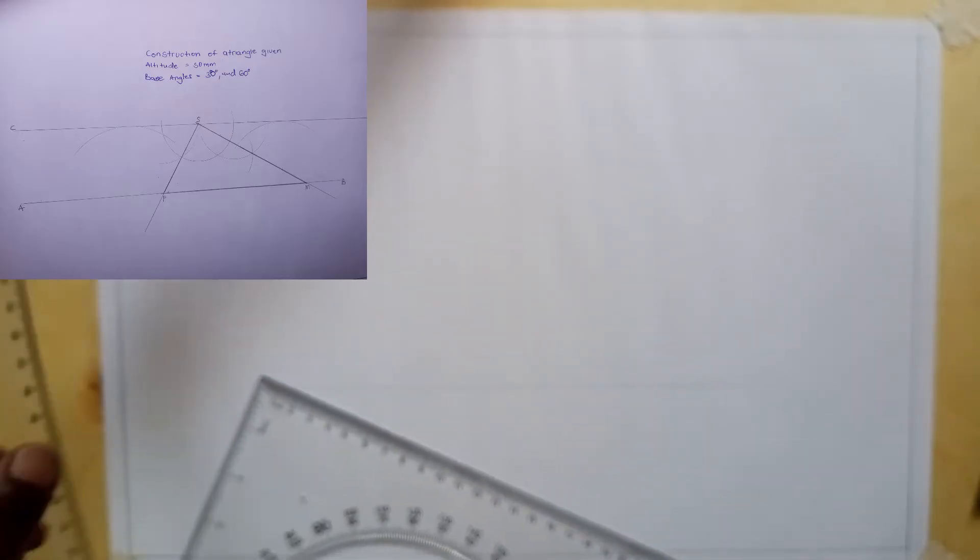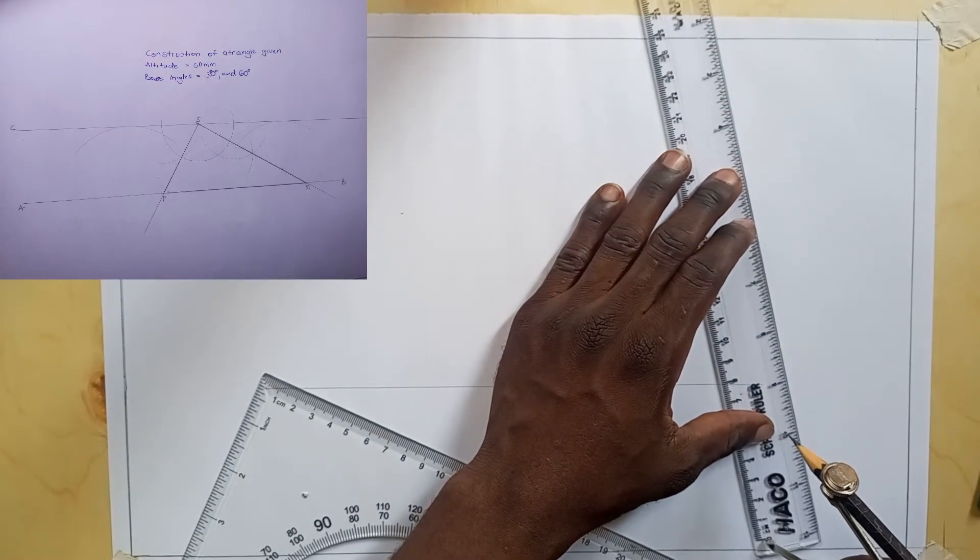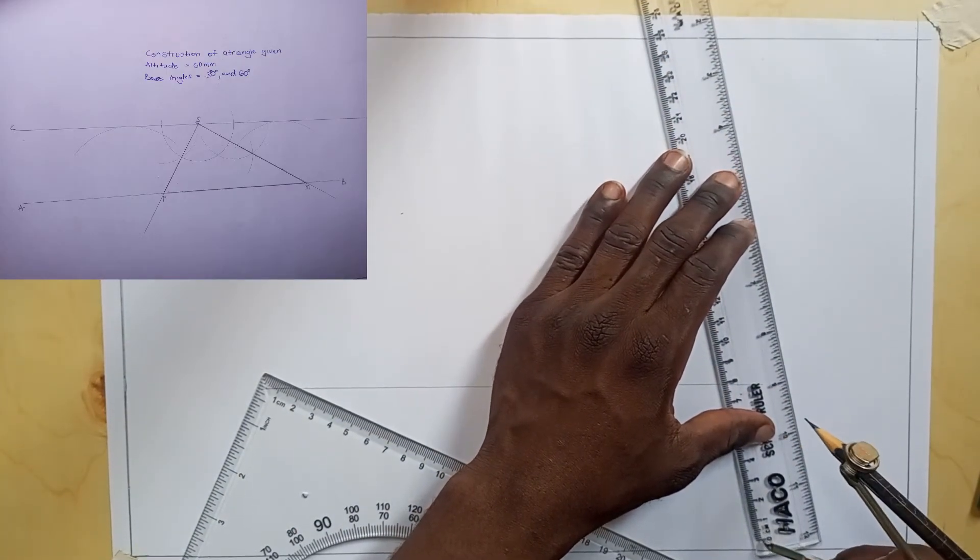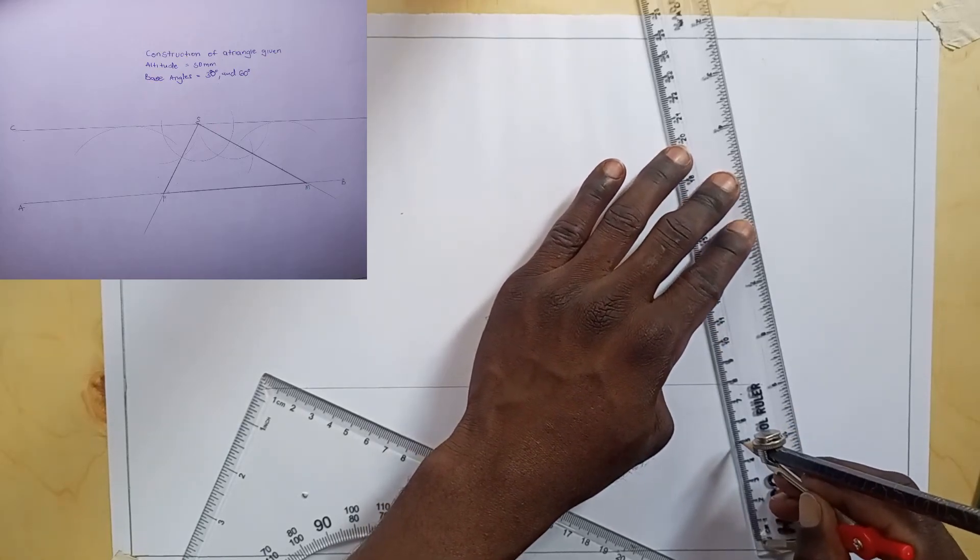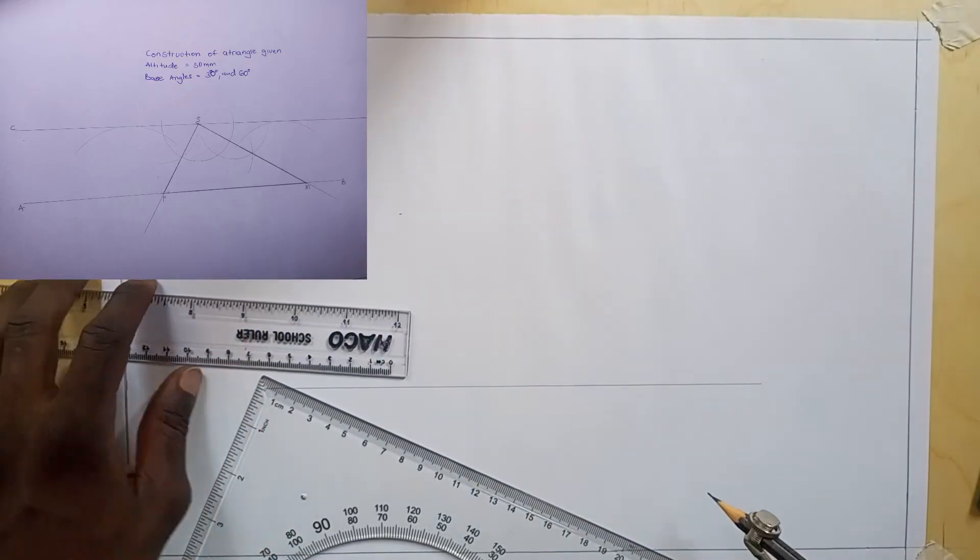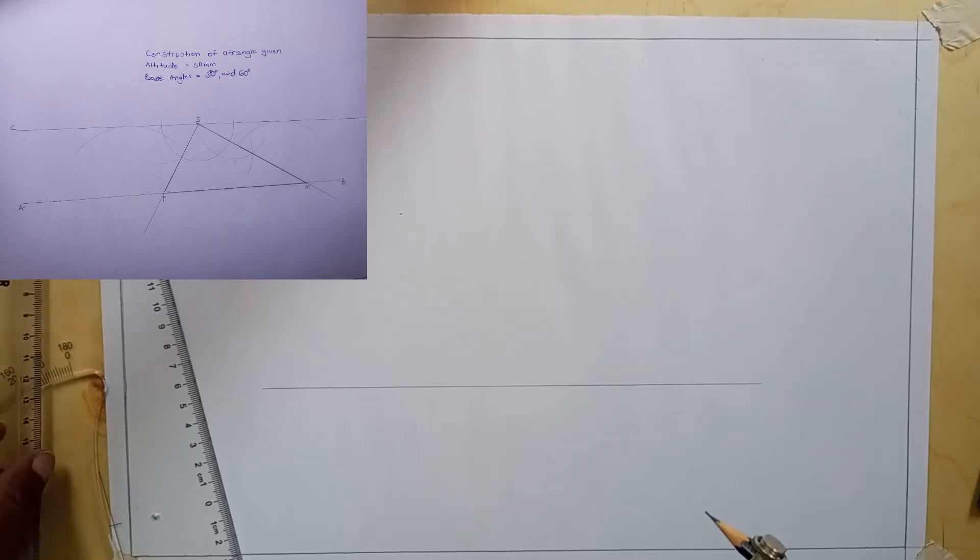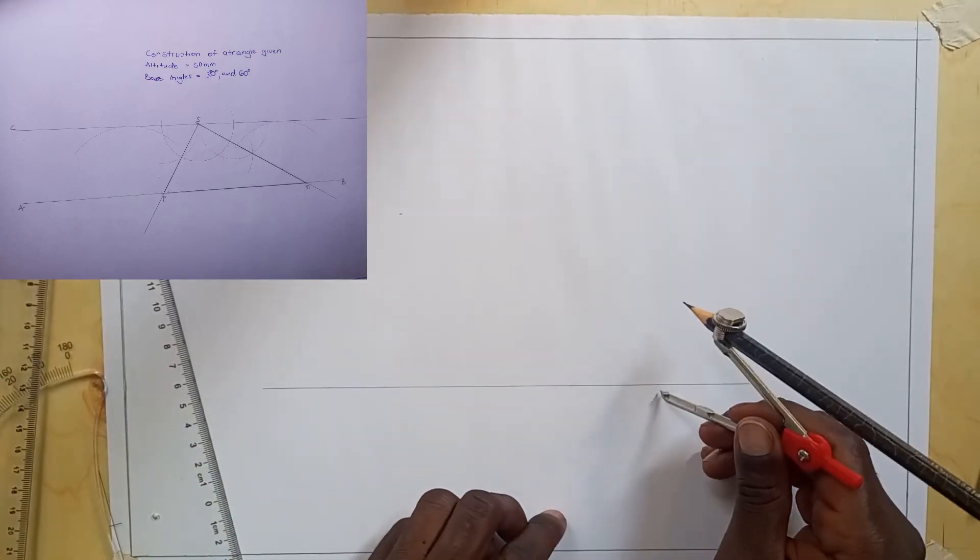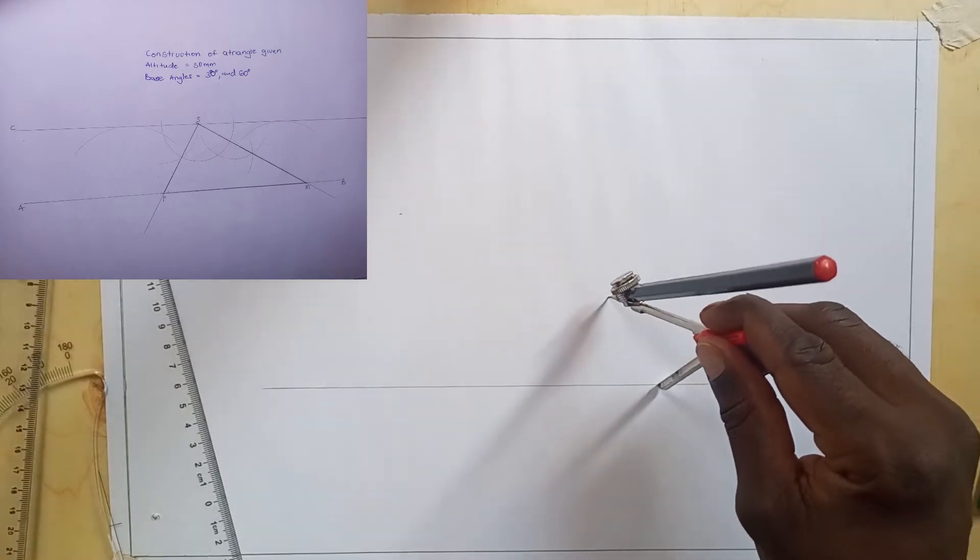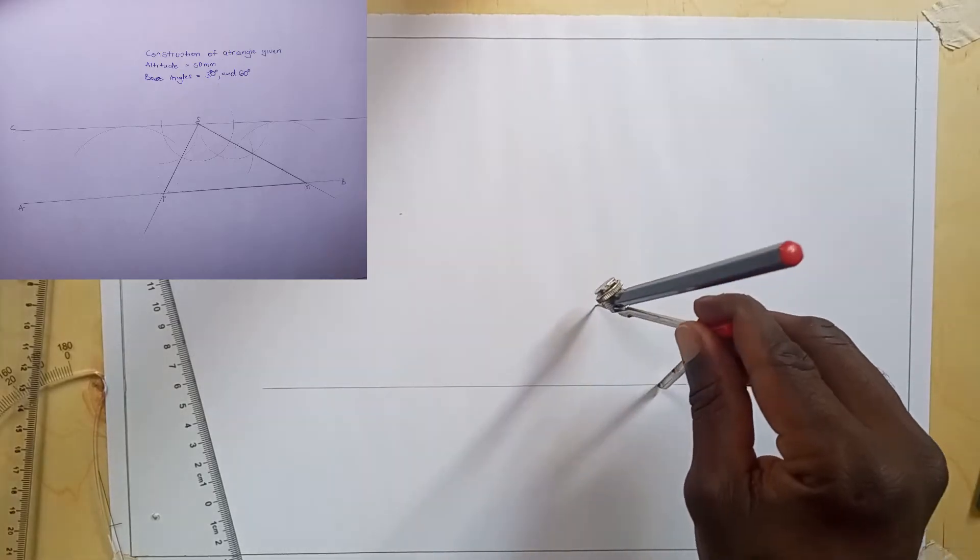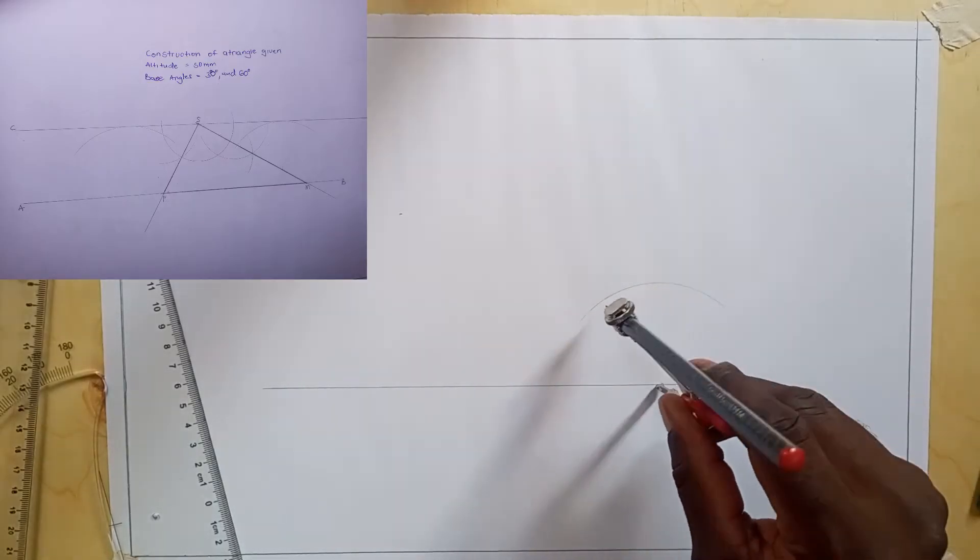Using your ruler, we're going to measure 50 millimeters right there. I'll come at your line and draw an arc whose radius is 50 millimeters.